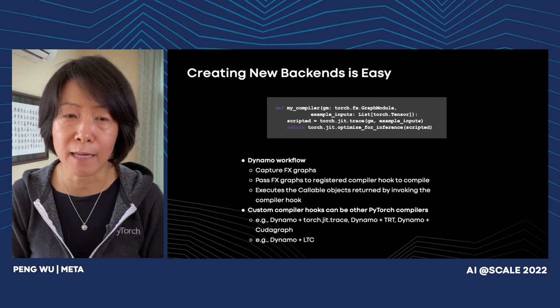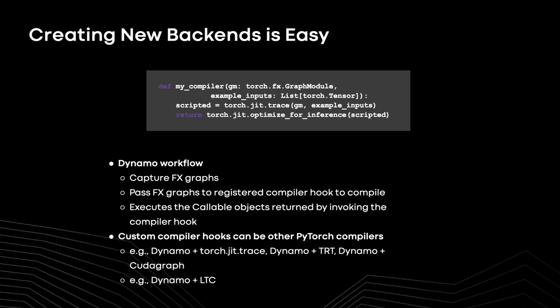As I mentioned, graph capture is just the front-end of a compiler — by itself it doesn't improve performance. The power of Dynamo is really to funnel the captured graphs into optimizing backends. We specifically designed the system so that integrating a new backend into TorchDynamo is very, very easy. In this example, we have a four-liner that integrates the TorchScript optimizing backend with TorchDynamo, and we applied similar changes for many other backends.